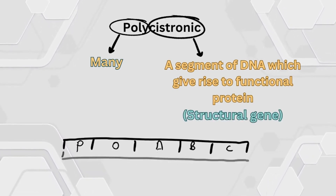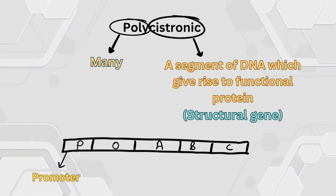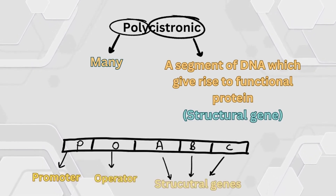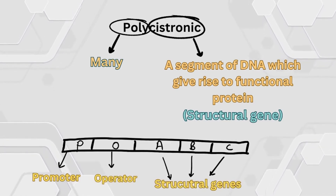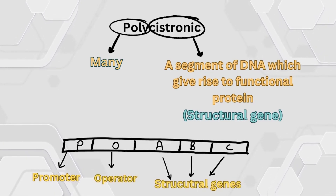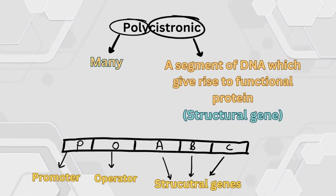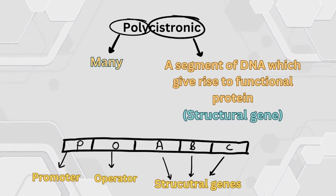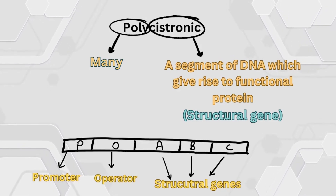A prokaryotic transcriptional unit consists of a promoter, operator, and more than one structural gene. That means in an operon model, many structural genes are present. Hence, we refer to the prokaryotic transcriptional unit as carrying information for more than one gene.